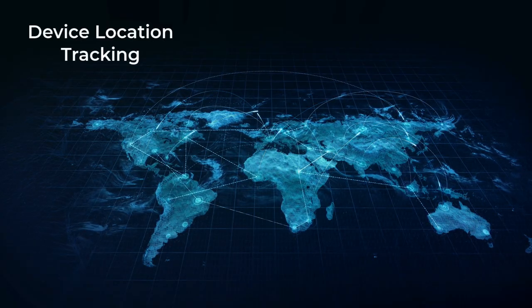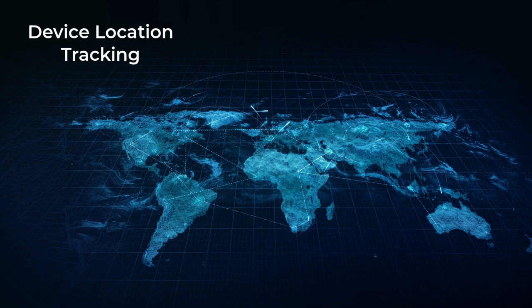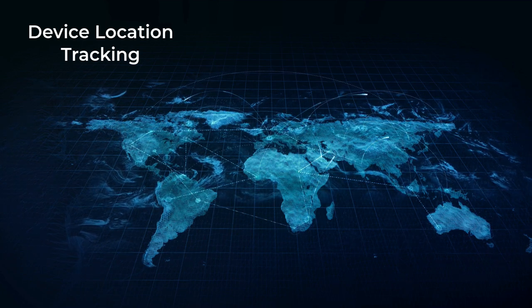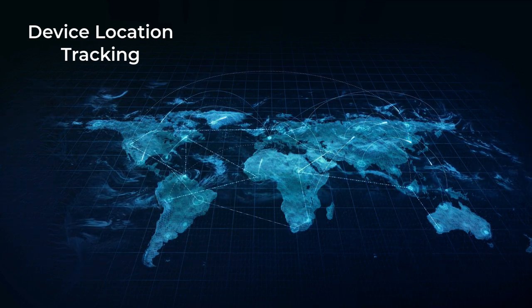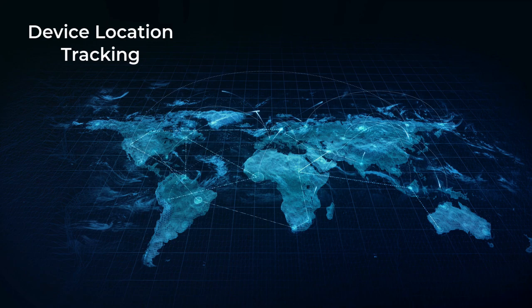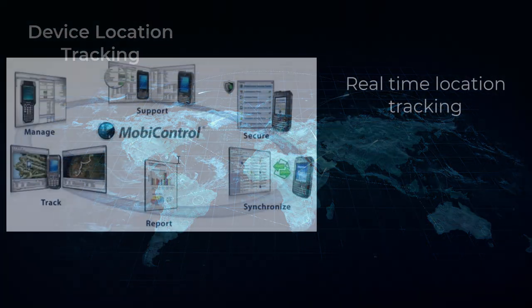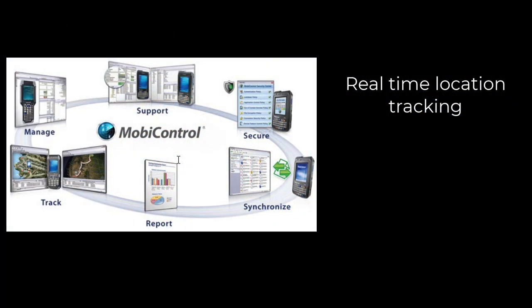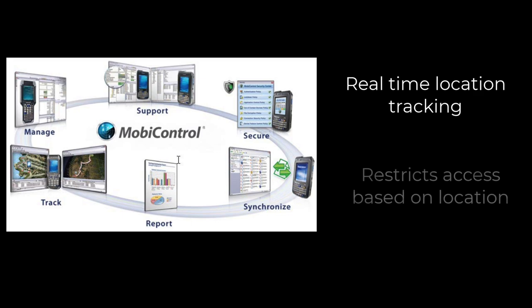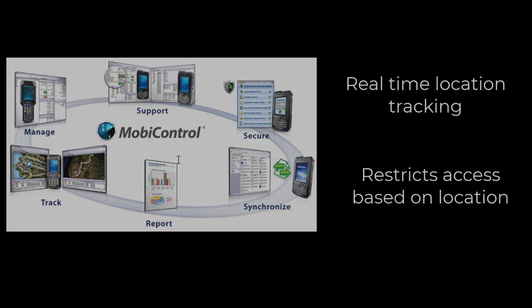Device location tracking allows IT administrators to track the location of enrolled devices. This can be useful for locating lost or stolen devices or ensuring that devices are being used in approved locations. For instance, SOTI MobiControl provides real-time location tracking of devices, helping organizations keep track of their assets. Location tracking can also be used to enforce location-based policies, such as restricting access to certain apps or data when a device is outside a designated area.